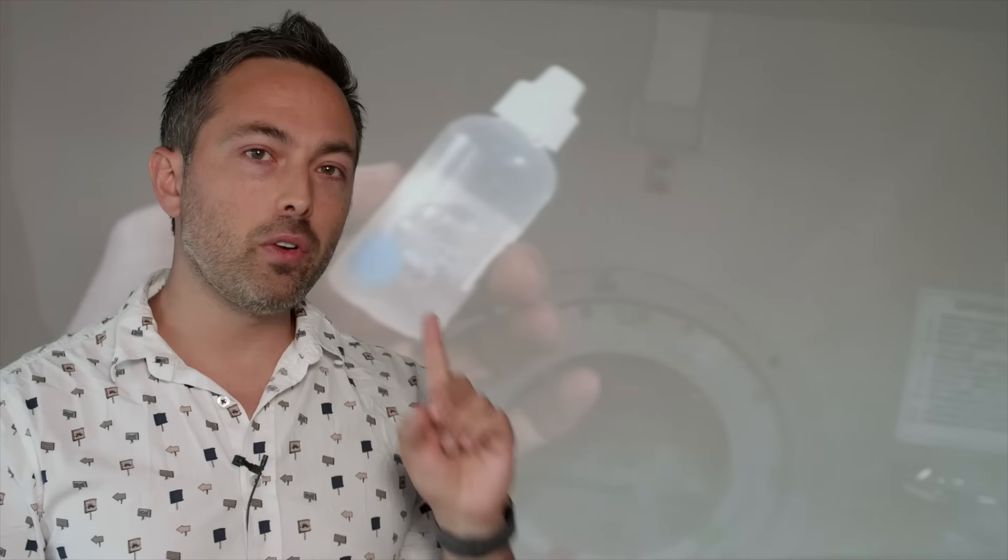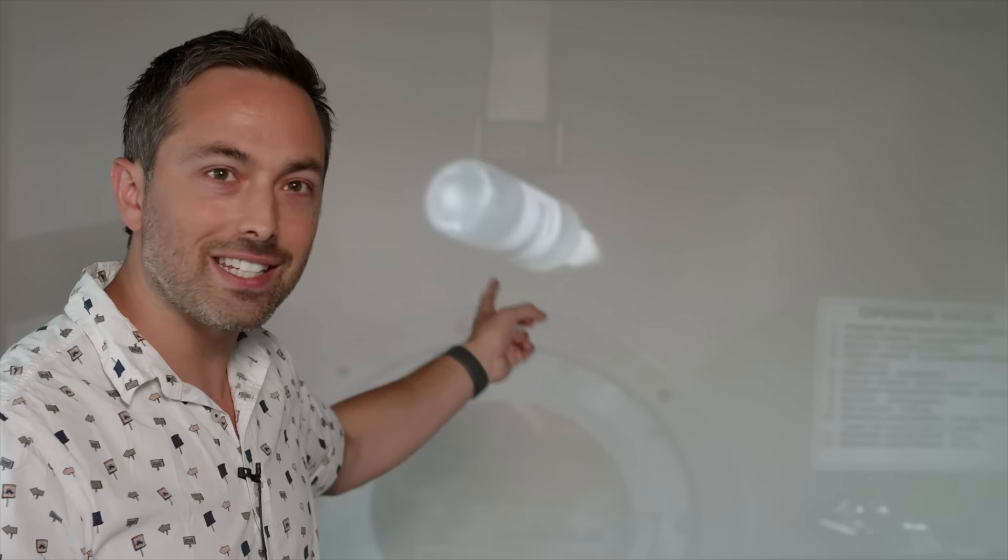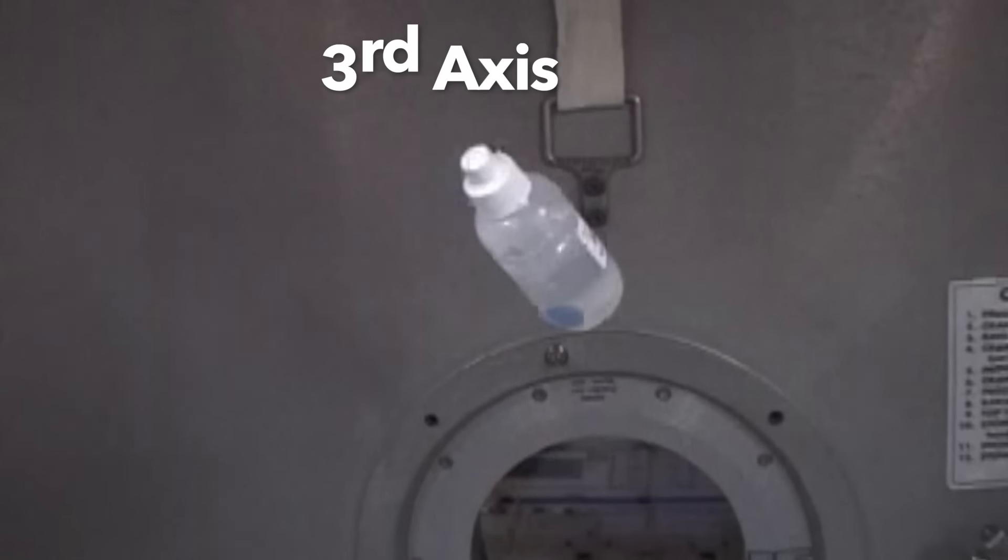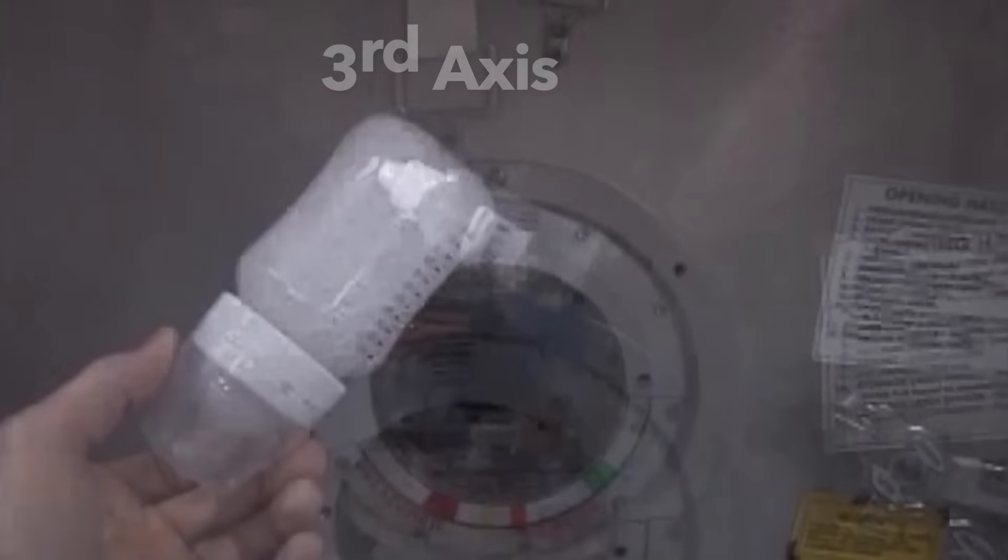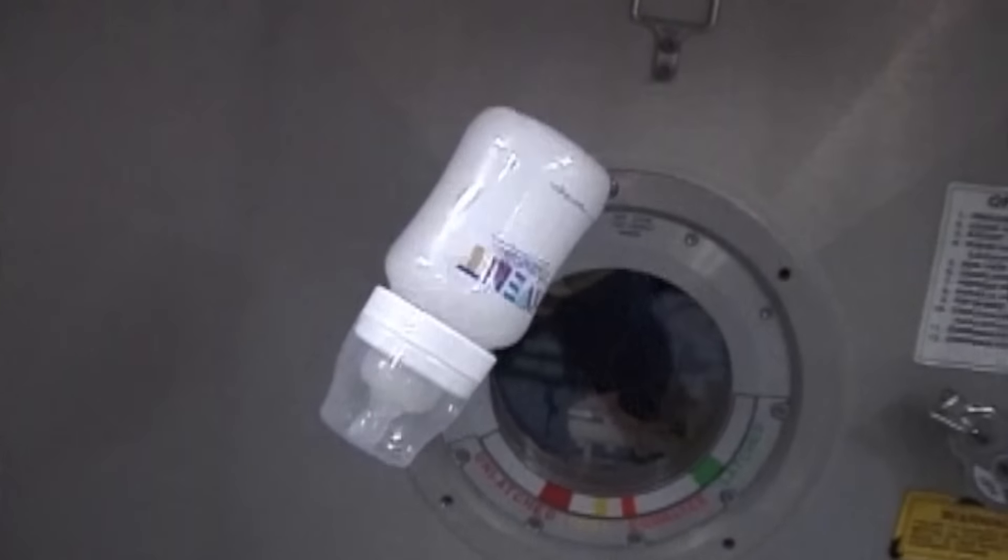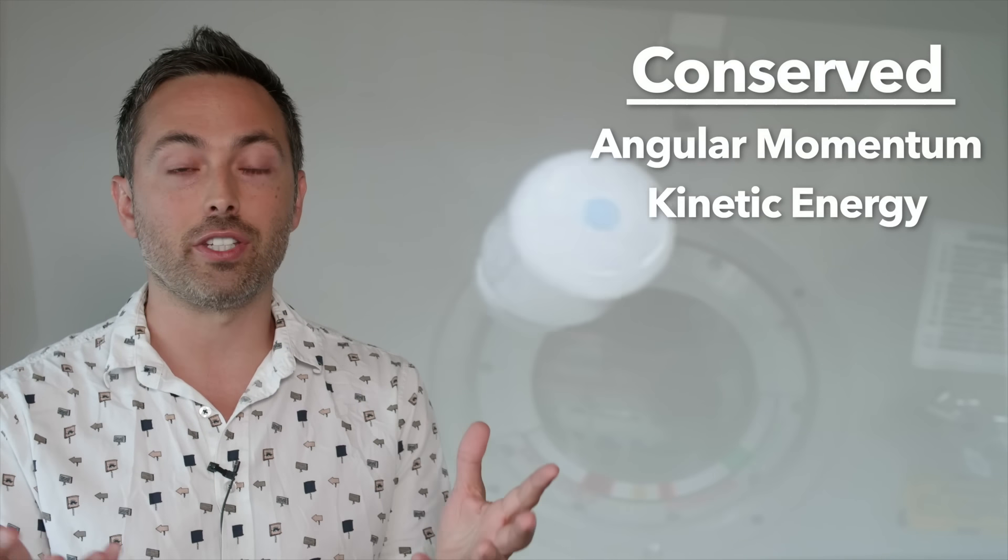But, a liquid-filled cylinder spinning about the first axis, that's the one with the smallest moment of inertia, it's unstable. And it'll end up rotating about its axis with the largest moment of inertia. Why is this?